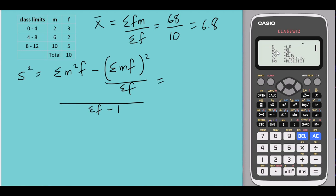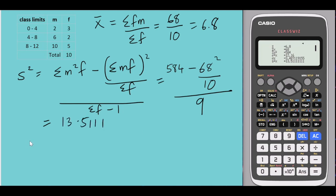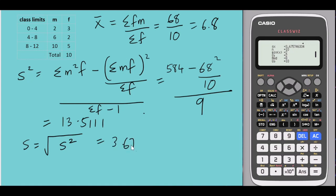The summation of m squared times f is 584. So the variance equals 584 minus 68 squared over 10, divided by 9, which gives 13.51. The sample standard deviation is the square root of the sample variance, which equals 3.6757. It's quite easy to use this calculator — and that's all.